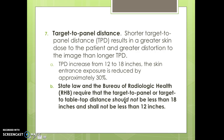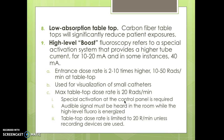Target to panel distance: a shorter target to panel distance results in greater skin dose to the patient and greater image distortion. Increasing the TPD from 12 to 18 inches reduces skin entrance exposure by approximately 30 percent. State law and the Bureau of Radiologic Health require that the target to panel or target to table distance should not be less than 18 inches and shall not be less than 12 inches.